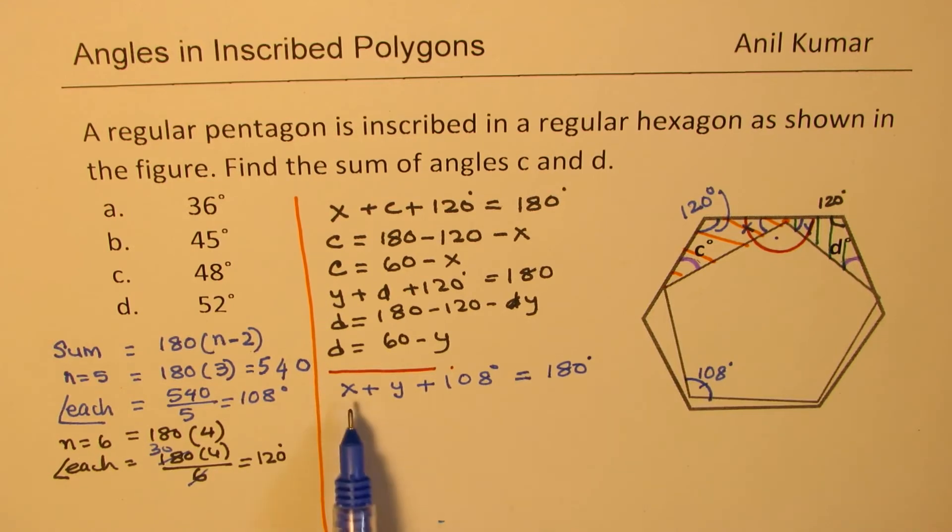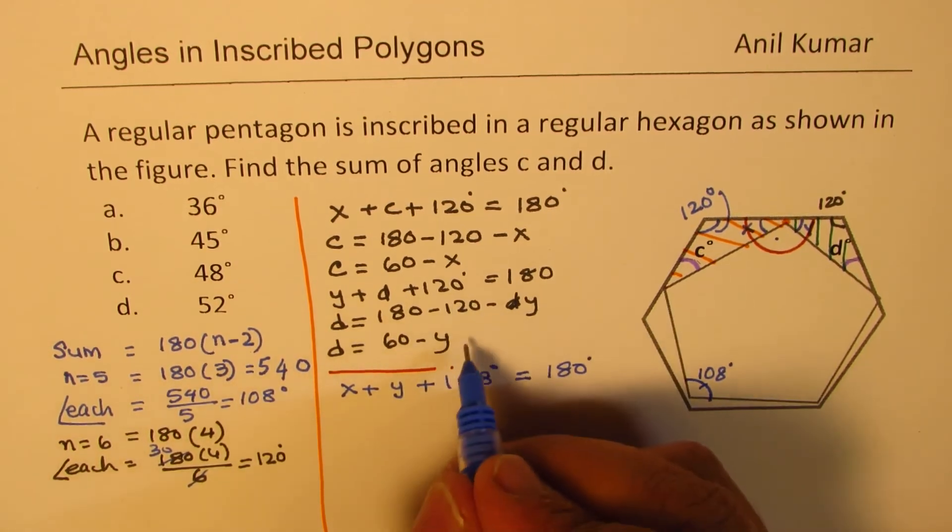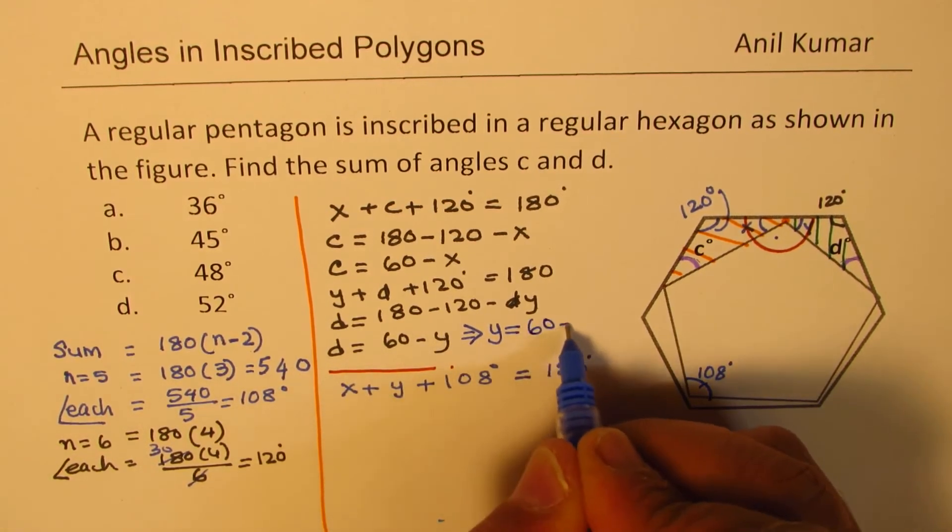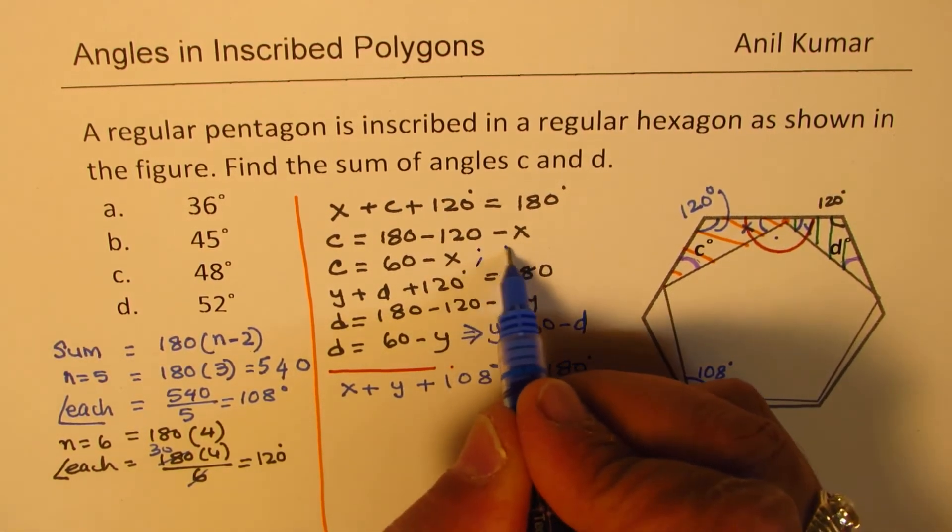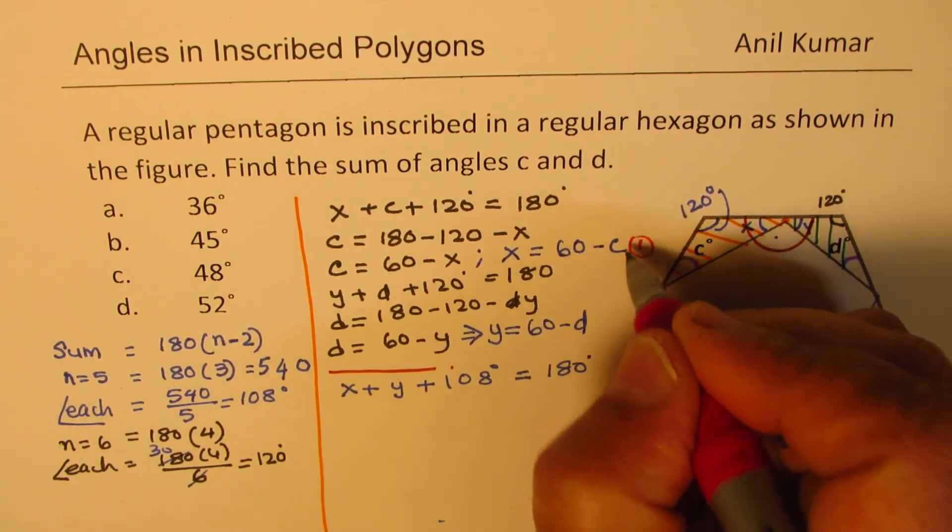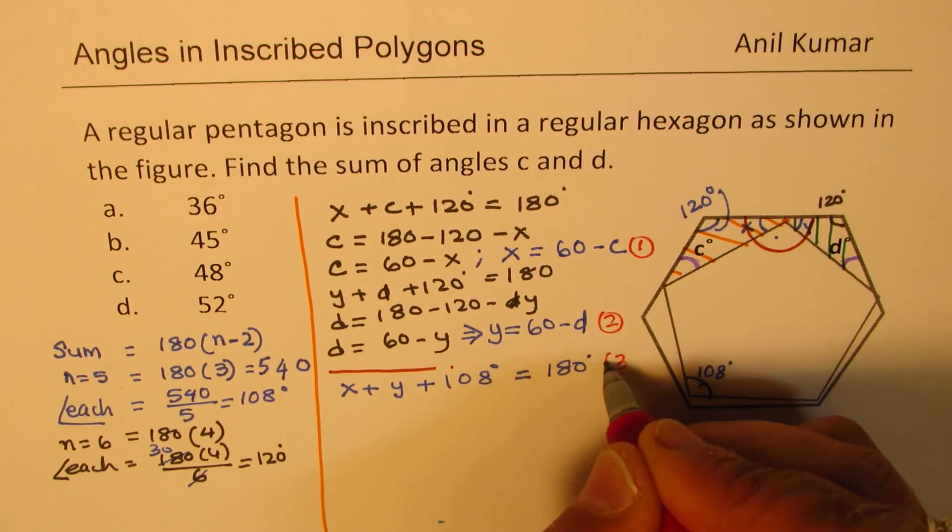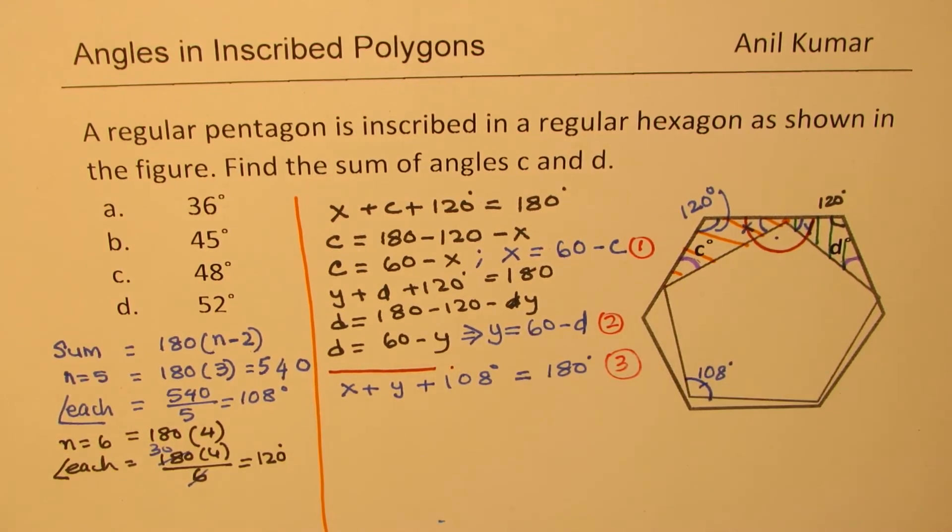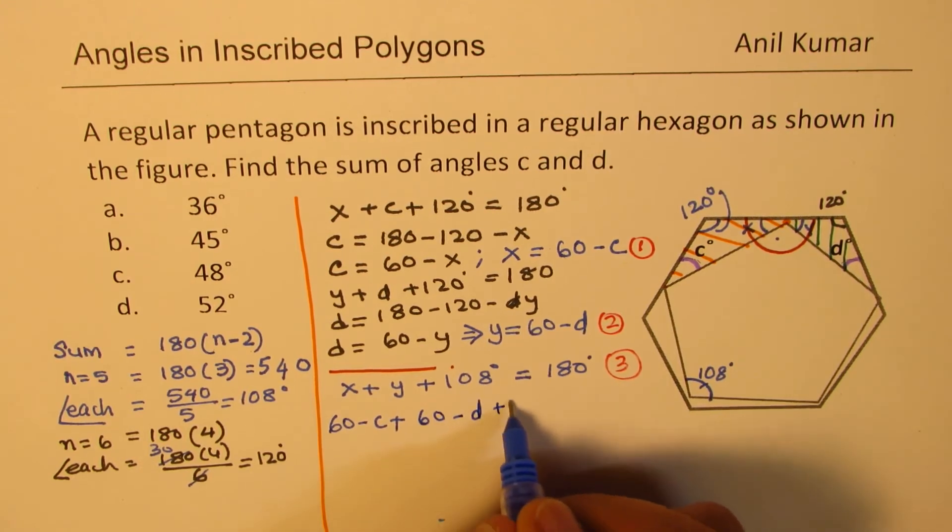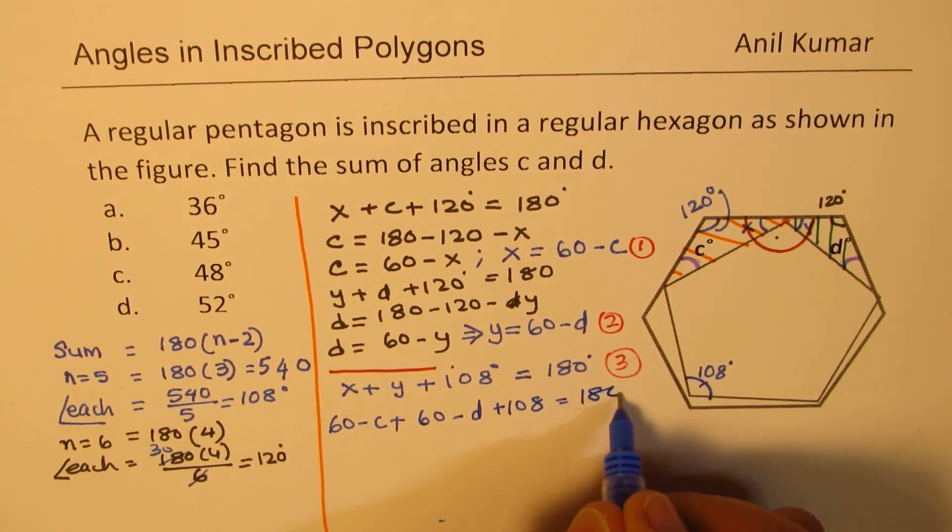So we can say what is X and Y? I could have written this better in terms of X and Y. So instead of isolating D, let's isolate Y. So Y will be equals to 60 minus D. And here, X will be equals to 60 minus C. So we'll call these as our equation number 1 and 2. And we'll substitute these values in equation number 3. So X is 60 minus C. So we'll write this as 60 minus C plus Y is 60 minus D plus 108 equals to 180.